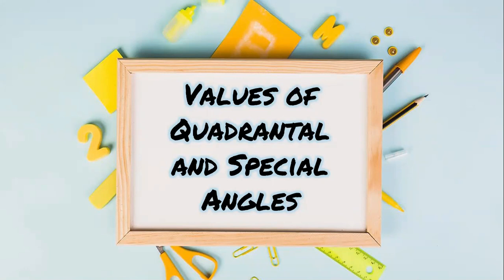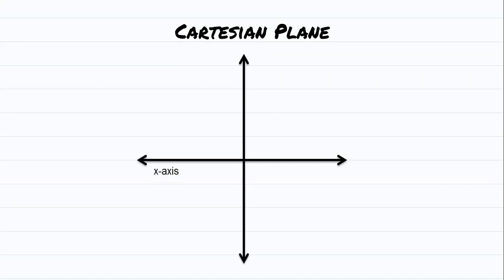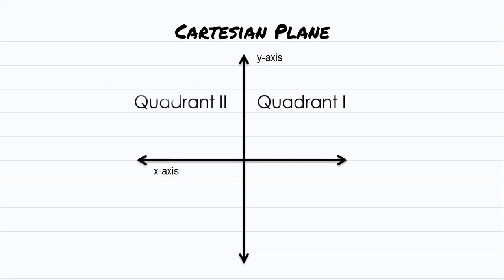Hi, once again. So today, let's continue discussing the values of quadrantal and special angles. Before that, let us recall the Cartesian plane. Here we have our x-axis and our y-axis. In naming the quadrants, we go counterclockwise: starting from here as quadrant 1, going to the left is quadrant 2, going down is quadrant 3, and going to the right is quadrant 4.